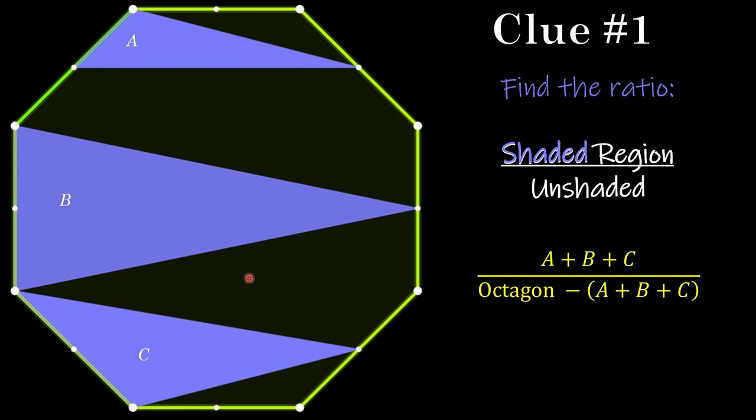Now to find the unshaded region, you could find the individual area of each of these other shapes. This one right in here between A and B is kind of ugly. Or I think the easier way to do it, take the entire octagon and subtract those three and that would be the unshaded. So that's clue number one.